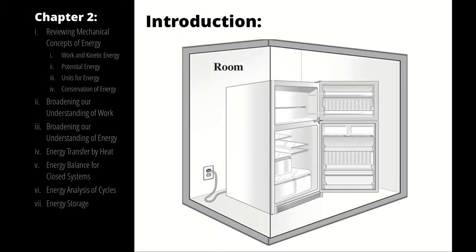What if instead of a fan it was a fridge — a refrigerator running in a room that is perfectly sealed and perfectly insulated, and what if that fridge was a perfect, ideal refrigerator? What would happen to the temperature of the air in the room? The temperature of the air in the room would still increase. We know that because we have energy entering and it can't leave. Even if the fridge is operating as perfectly as possible, you are still paying an investment of energy to move heat around, and that movement of heat eventually manifests as an increase in temperature of the air in the room.